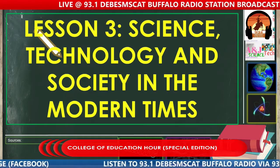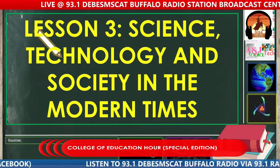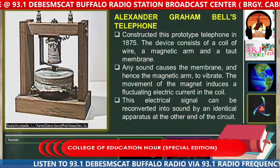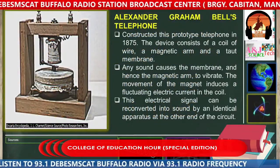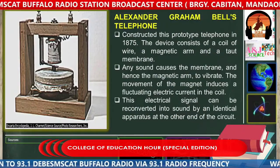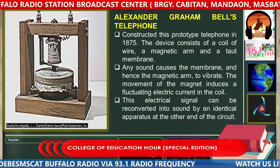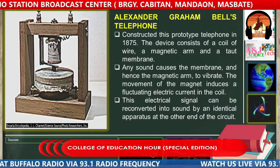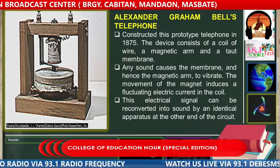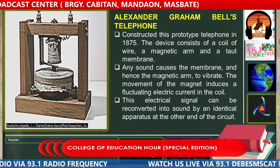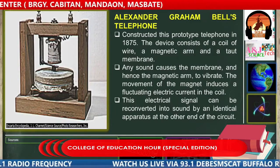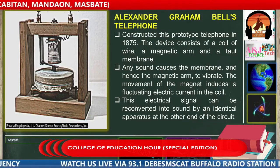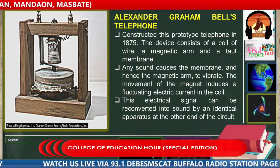In the modern times, there is the discovery of the telephone, of course. Alexander Graham Bell invented the telephone. When he constructed this prototype telephone in 1875, the device consists of a coil of wire, a magnetic arm, and a taut membrane.